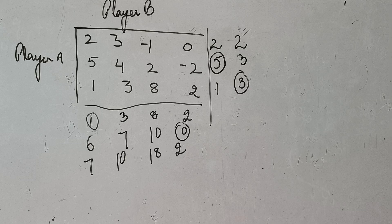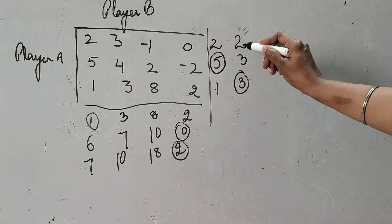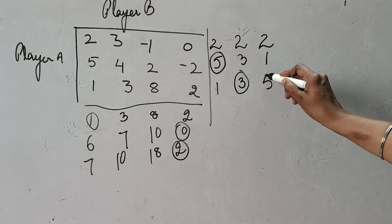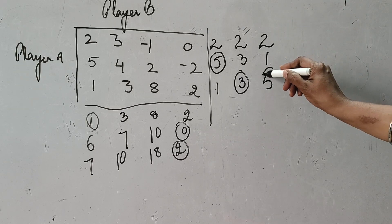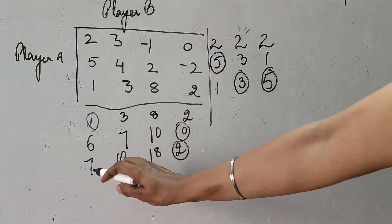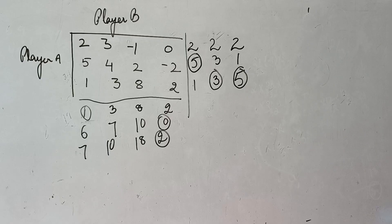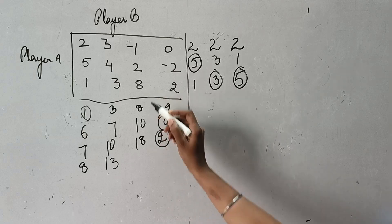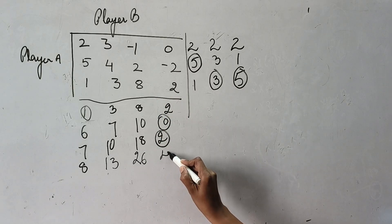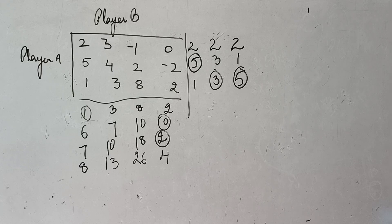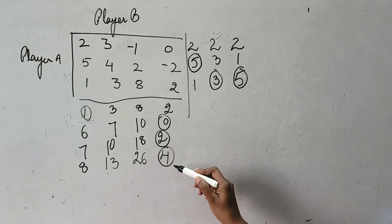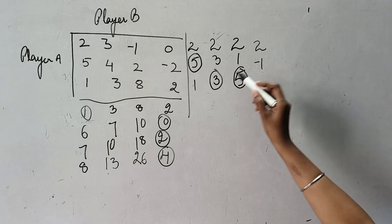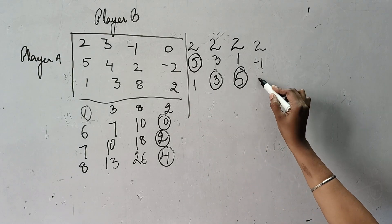The maximum of the column is 5. Go inside that row and add to previous elements: 7+1=8, 10+3=13, 18+8=26, 2+2=4. The minimum of this row is 4 — circle it. Go inside that column and add: 0+2=2, minus 2+1=minus 1, 2+5=7. Again column-wise maximum — select the largest, which leads us to the next row. Add elements: 1+8=9, 13+3=16, 26+8=34, 2+4=6.